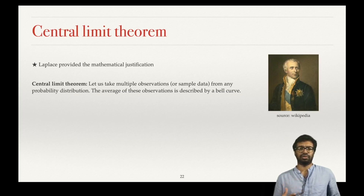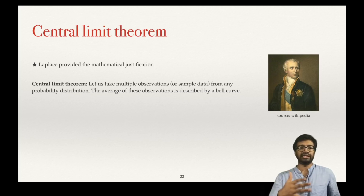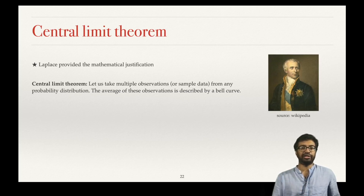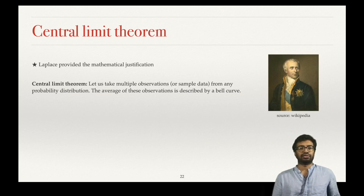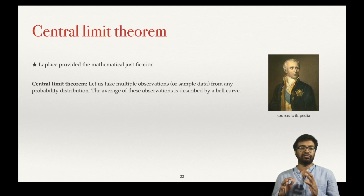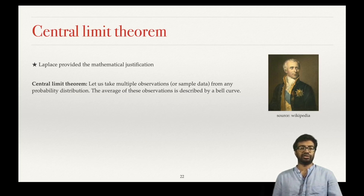Why is this connected to Gauss's assumption? Because most scientists take multiple observations and then take their average — that is what we have been saying. The recorded data following a bell curve is the basis on which Gauss predicted the movement of asteroids. The central limit theorem places the bell curve as a very fundamental distribution — because no matter which distribution you start with, if you take an average of samples, you get the bell curve.